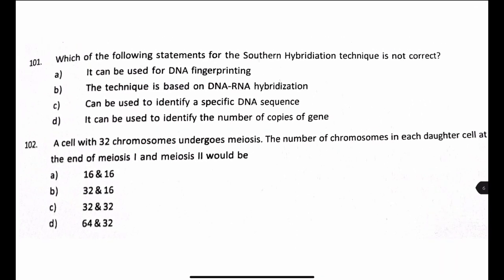Next question: which statement about Southern hybridization is not correct? It can be used for DNA fingerprinting — true. It can identify a specific DNA sequence — true. It can identify the number of copies of a gene — true. But the statement that the technique is based on DNA-RNA hybridization is false, because the labeled probe used in Southern hybridization consists of DNA sequences complementary to the gene of interest, not RNA. Answer: option B.